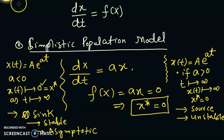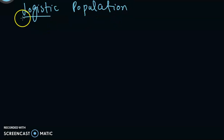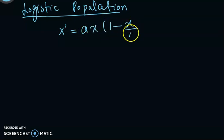On the same lines, we have also seen the so-called logistic population model. The logistic population model was given by x' = ax(1 - x/N).